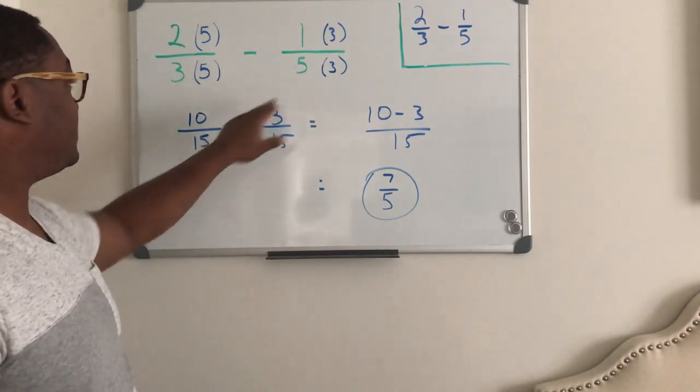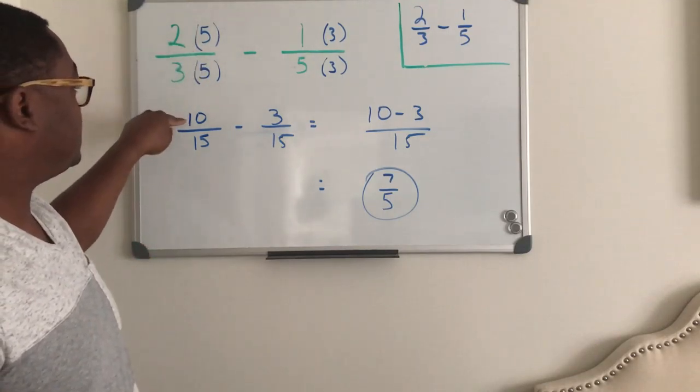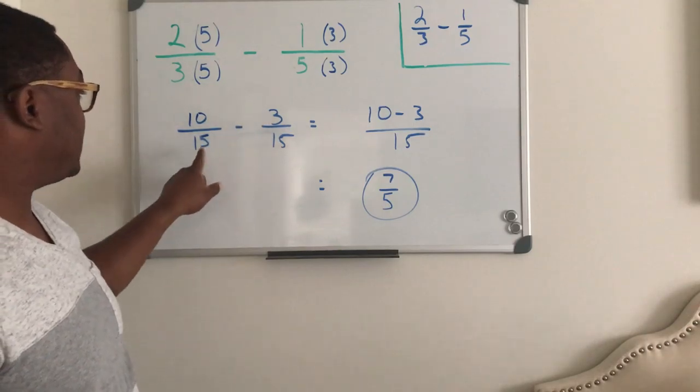So now that you have three times five and five times three, well, the commutative property of multiplication says you can do that, right? So again, three times five and five times three.